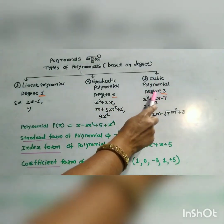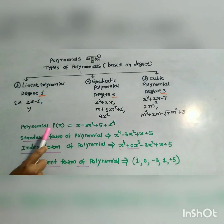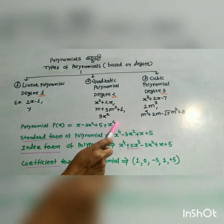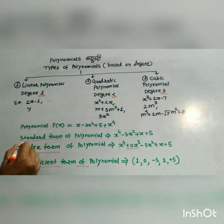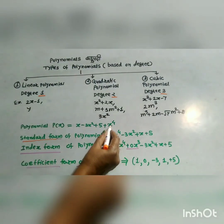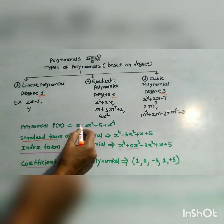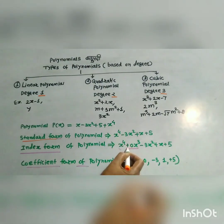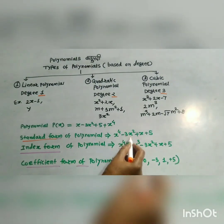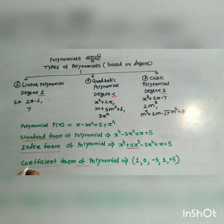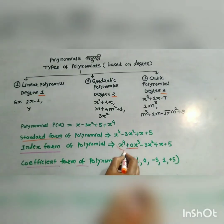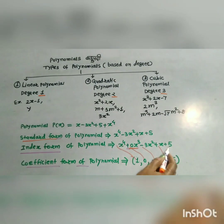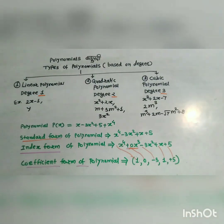The polynomial p(x) equals x minus 3x squared plus 5 plus x raised to 4. The standard form is x raised to 4 minus 3x squared plus x plus 5. The index form is x raised to 4 plus 0x cubed minus 3x squared plus x plus 5. The coefficient form is 1, 0, negative 3, 1, and positive 5.